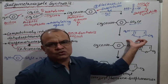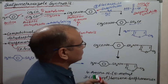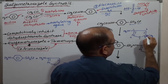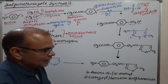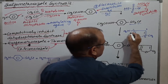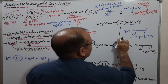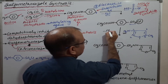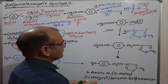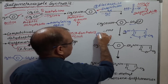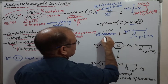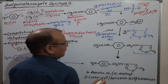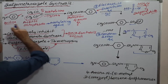The next step involves attaching the side ring system — the isoxazole derivative. The isoxazole numbering is: one, two, three, four, and five. The derivative used is 3-amino-4-methyl isoxazole. This reacts with the sulfonyl chloride with removal of HCl, and this reaction is known as a condensation reaction — reaction number three. The side chain is now attached.